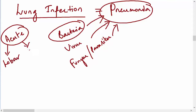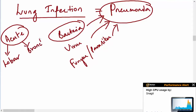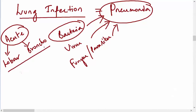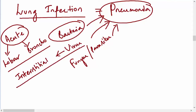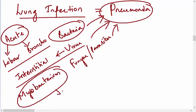We discussed in detail about bacteria. Acute bacterial infections produce lobar and bronchopneumonia. Viral infections produce interstitial pneumonia. Apart from that, we have a special bacteria — mycobacterium — which produces a chronic granulomatous inflammation.